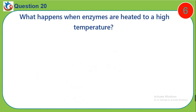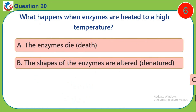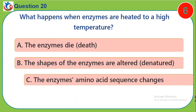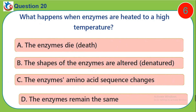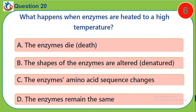Question 20. What happens when enzymes are heated to a high temperature? A. The enzymes die. B. The shapes of the enzymes are altered — that is, denatured. C. The enzymes undergo minor acid sequence changes. D. The enzymes remain the same.